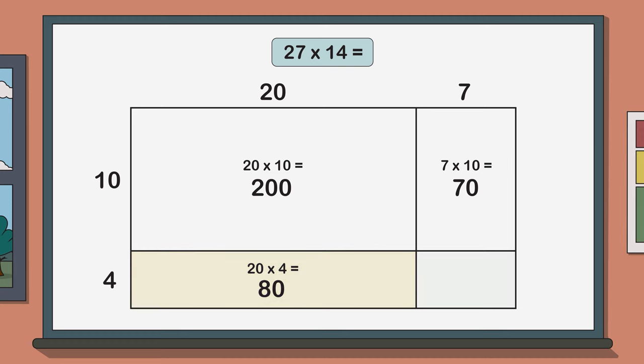And this last rectangle in the bottom right has a length of 7 and a width of 4. And 7 times 4 is 28.